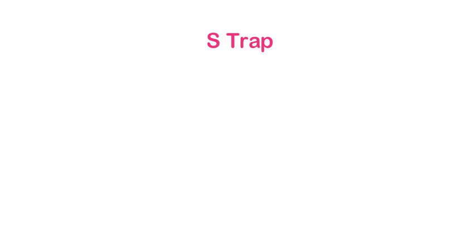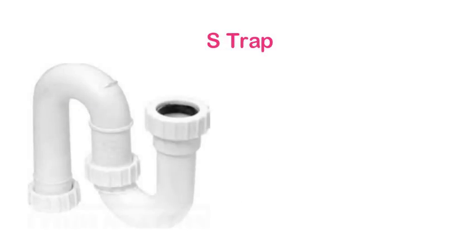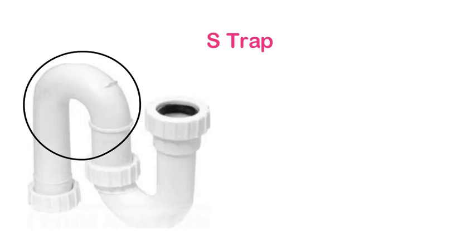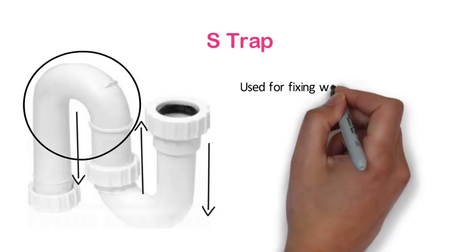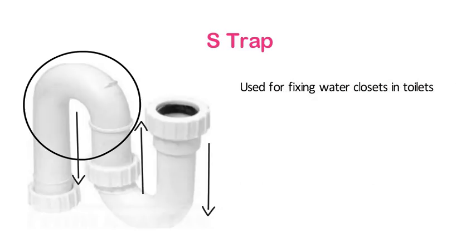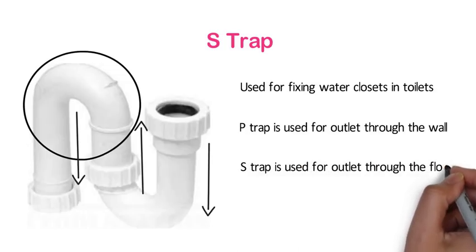S trap. Like a P trap, an S trap has an inverted curve but it lacks the horizontal arm. Instead it curves down, then up, then down again like the letter S and connects to the drain pipe in the floor. This trap is used for fixing water closets in toilets. The only difference between a P trap and an S trap is that the P trap is used for outlet through the wall, whereas the S trap is used for outlet through the floor.